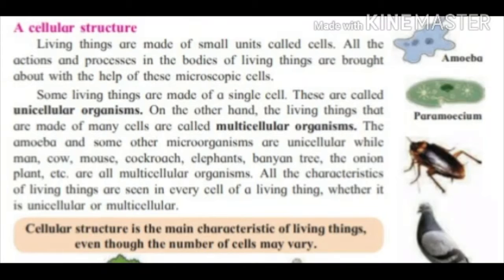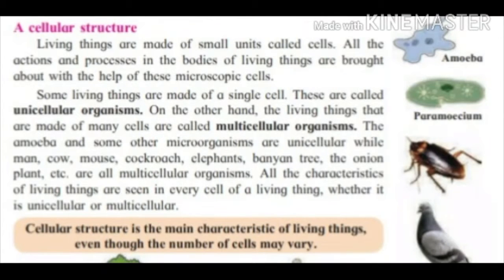Some living things are made up of a single cell. These are called unicellular organisms, like amoeba and paramecium. These cannot be seen easily — only with the help of a microscope. On the other hand, living things that are made of many cells are called multicellular organisms.